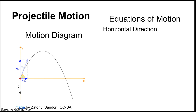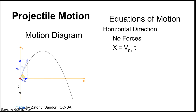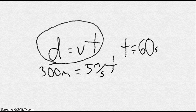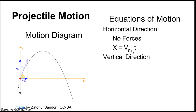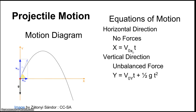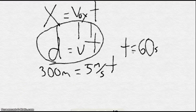When something is thrown in the air, the only force acting on it is weight — gravity — acting downward. In the horizontal direction there are no forces, so there's no acceleration. The equation for horizontal motion is: X = V₀ₓ · t, where X is the horizontal distance and V₀ₓ is the initial velocity in the x direction. This is the same form as d = vt that we've already used.